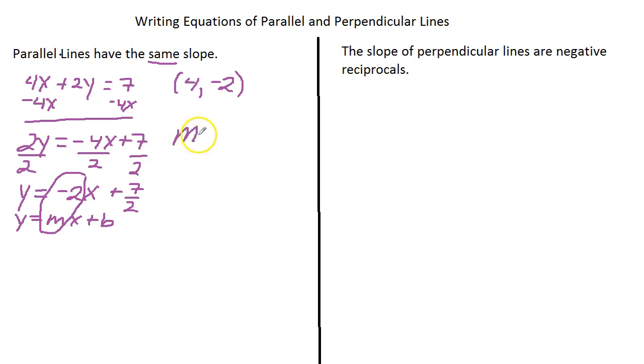So our slope m equals negative 2. So we can use our point slope formula, y minus y subscript 1 equals m times x minus x subscript 1. Our x subscript 1 is 4, our y subscript 1 is going to be negative 2. So y minus negative 2 equals negative 2, our slope, times x minus 4.